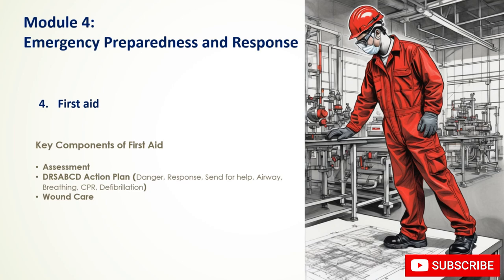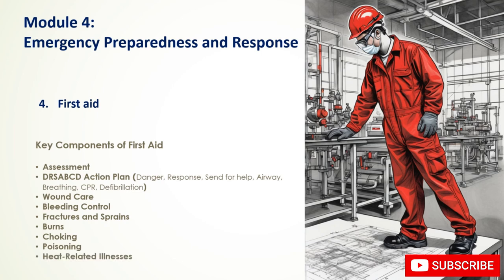Additional first aid procedures include wound care — cleaning and dressing minor cuts, scrapes, and burns; bleeding control by applying pressure; fractures and sprains — immobilizing injured limbs and applying cold compresses; burns — cooling the area with cold water and covering with a sterile dressing; choking — performing the Heimlich maneuver; poisoning — identifying the poison and following appropriate procedures; heat-related illnesses such as heat stroke and heat exhaustion; and cold-related illnesses such as hypothermia and frostbite.